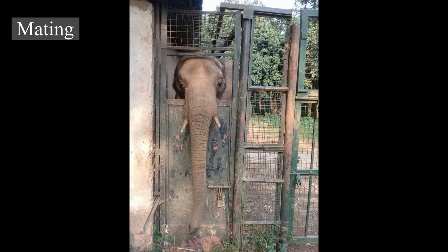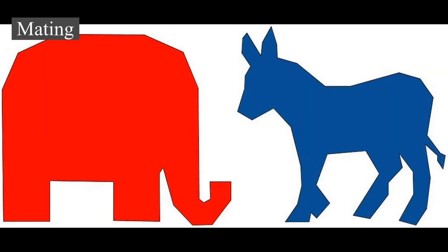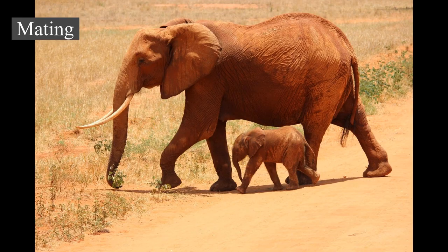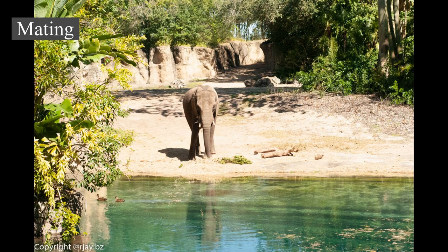During copulation, a male lays his trunk over the female's back. The penis is very mobile, being able to move independently of the pelvis. Copulation lasts about 45 seconds and does not involve pelvic thrusting or ejaculatory pause. Elephant sperm must swim close to 2 m (6.6 ft) to reach the egg, compared to human sperm which has to swim around only 76.2 mm (3.0 in). Homosexual behavior is frequent in both sexes. Male elephants sometimes stimulate each other by play-fighting and companionships may form between old bulls and younger males. Female same-sex behaviors have been documented only in captivity.